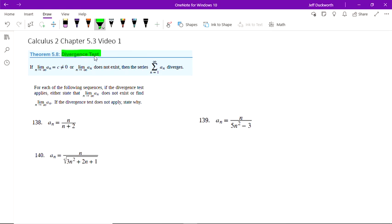For our divergence test, if the limit of the a_n as n approaches infinity equals some number c which is not zero, or if there's no limit, or if the limit of a_n doesn't exist, then that series diverges.